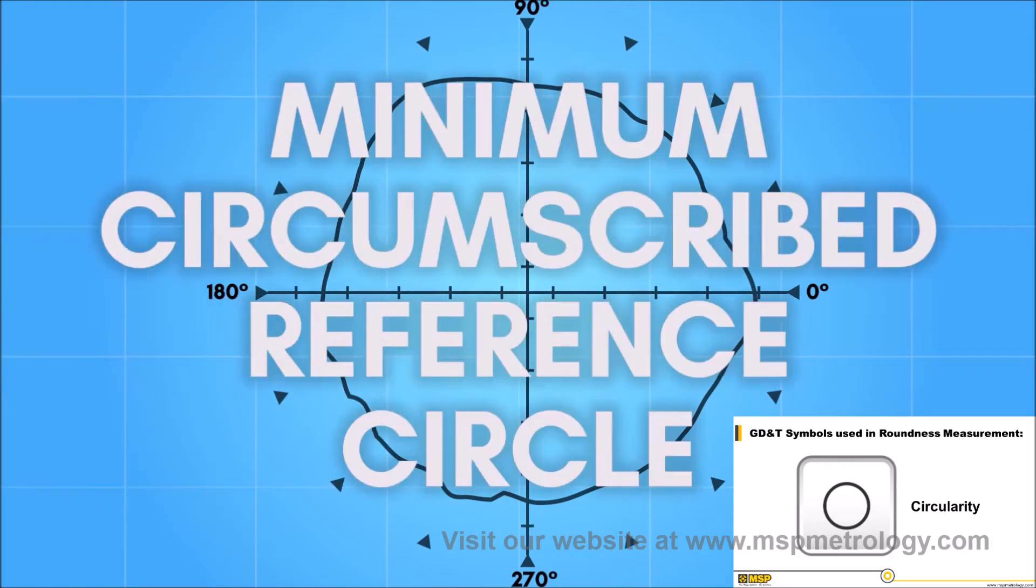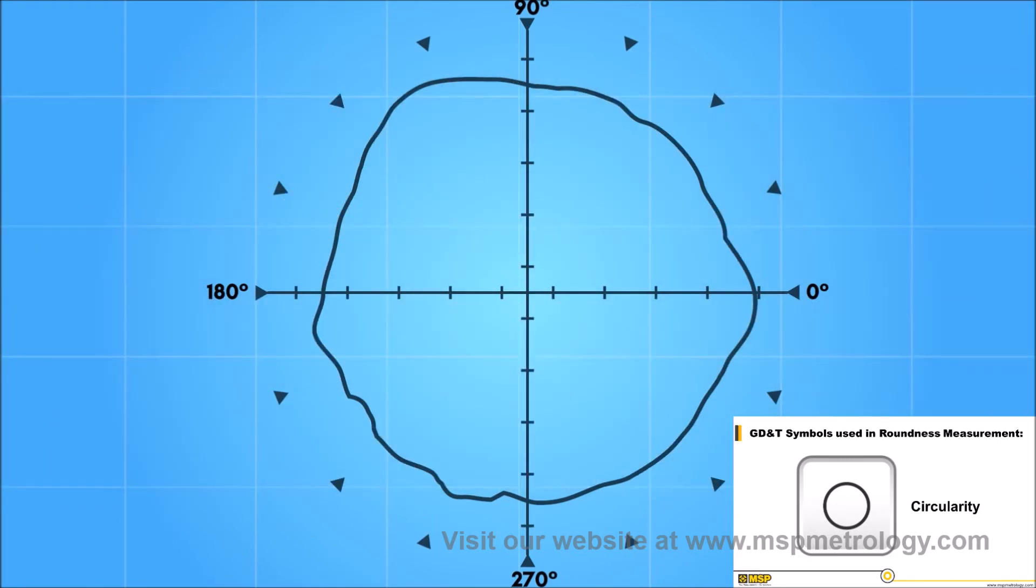A minimum circumscribed reference circle, sometimes known as the ring gauge reference circle, is the smallest circle that totally encloses the data. Out of roundness is quantified as the maximum deviation of the data from this circle.